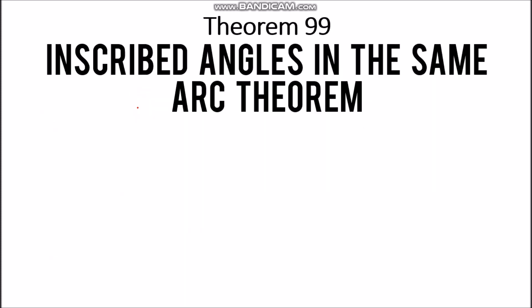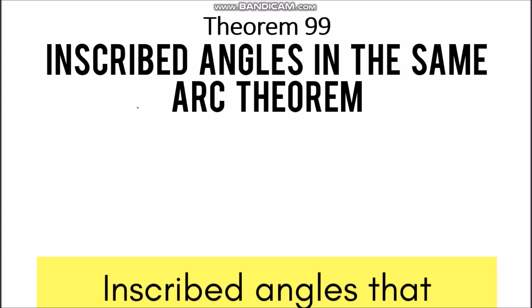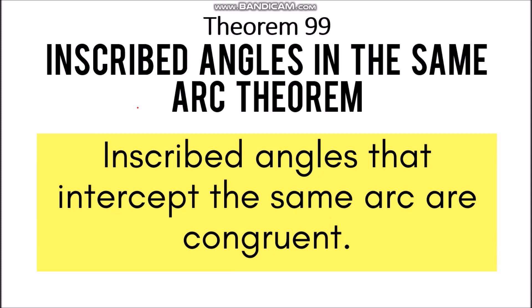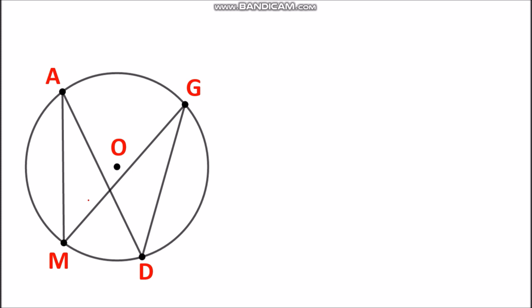Next is Theorem 99, which is the Inscribed Angles in the Same Arc Theorem. It states that inscribed angles that intercept the same arc are congruent. So whenever we have inscribed angles and they intercept the same arc, they should have the same measurement, or they are considered congruent angles.